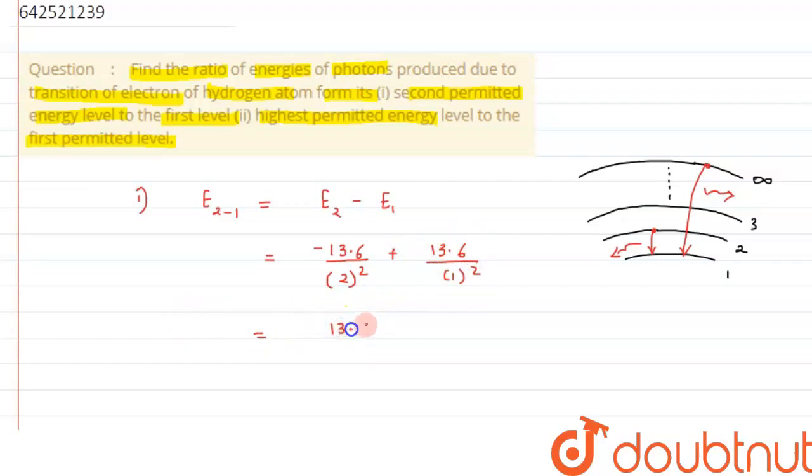On solving this, we can write 13.6 times 1 minus 1 by 4, which gives us the answer as 13.6 into 3 by 4. Let's say this is our equation number 1.